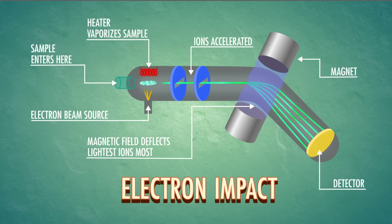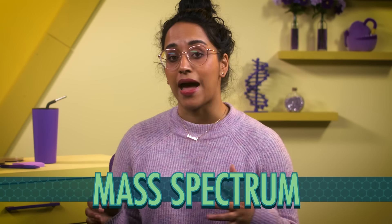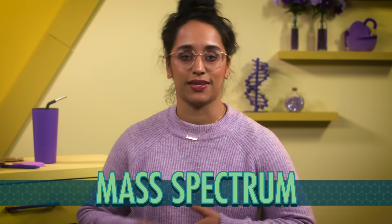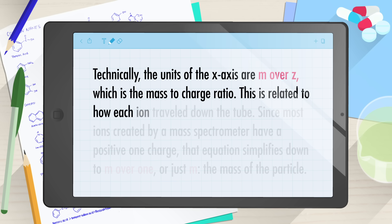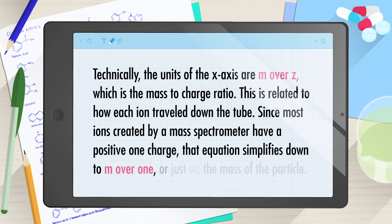Then a mass spectrum is produced, with mass on the x-axis and the relative number of ions on the y-axis. Technically, the units of the x-axis are m/z, which is the mass-to-charge ratio. This is related to how each ion traveled down the tube. Since most ions created by a mass spectrometer have a positive 1 charge, that equation simplifies down to m/1, or just m, the mass of the particle. Now, the molecular fragments hitting the detector form a fragmentation pattern that's unique to the molecule.